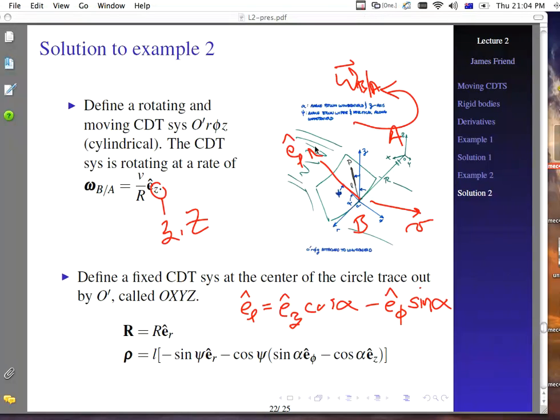And we're continuing on here. So what we've done is we've said that E sub L is equal to E sub Z cosine alpha minus E sub phi sine alpha.